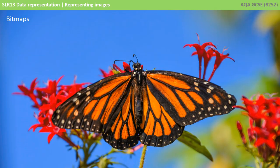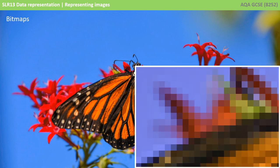Here is a typical bitmap image of a butterfly. If we zoom in, you can see the image is made of lots of different coloured pixels. This is a bitmap.